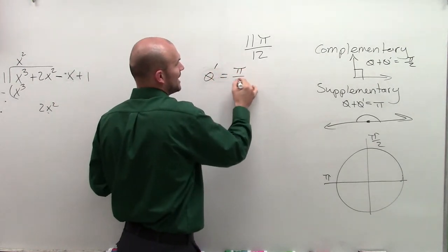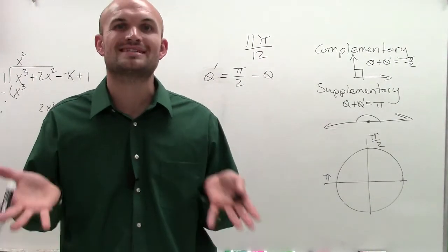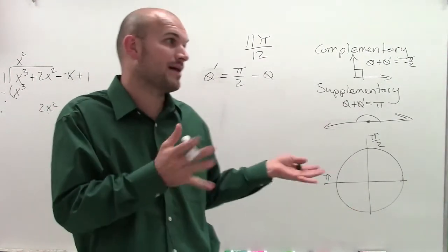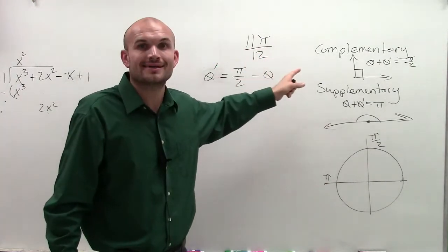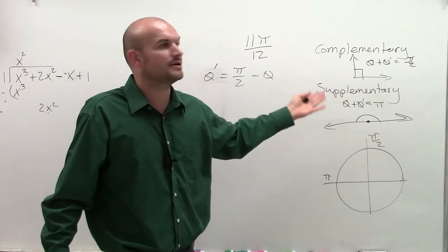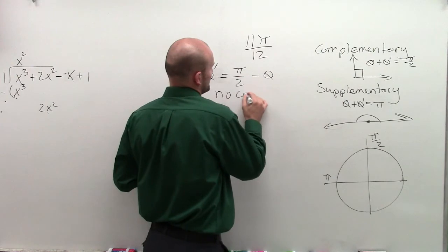equals pi over 2 minus theta. Now the problem is, remember, the definition says what two numbers add up to give you 90 degrees, or pi over 2. Well, ladies and gentlemen, this value is larger than pi over 2, so therefore I do not have any complementary angle. So this doesn't work.